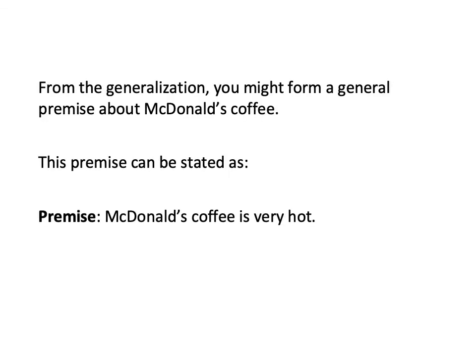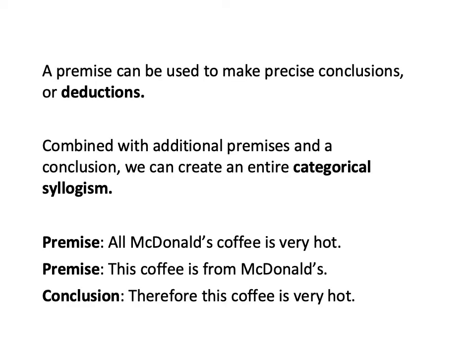However, from this generalization you can also form a general premise about McDonald's coffee, and you can state this premise formally: McDonald's coffee is very hot. This is a fact that you can now test — you can make conclusions about specific cases based on this general premise. That's what deductive logic is about. Once you have a premise, you can use it to make precise conclusions, and we call these deductions. Combined with additional premises, additional information, and a conclusion, you can create what's called a syllogism — a formal statement of facts and a conclusion from those facts.